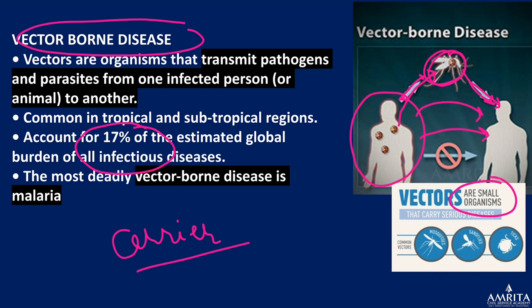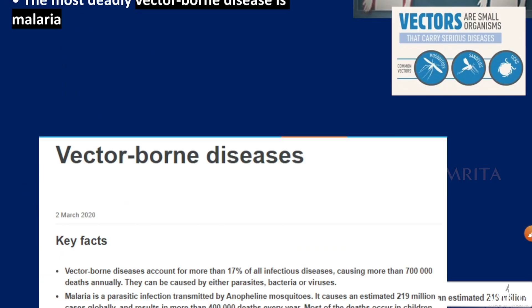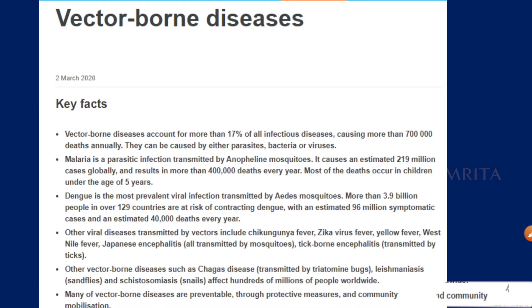The pathogen is not transferred directly from person to person like in coronavirus. Instead, it gets transmitted through a vector — a middleman — who takes up the pathogen and delivers it to another host. Around 17 percent of all infectious diseases are caused by vector-borne diseases, causing more than 7 lakh deaths globally.